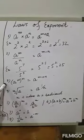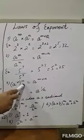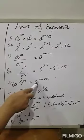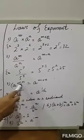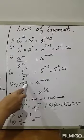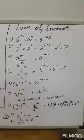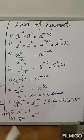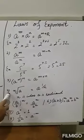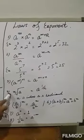The third law is the law of power of a power: (A raised to power M) raised to power N equals A raised to power (M times N). When a power is raised to another power, the exponents multiply.